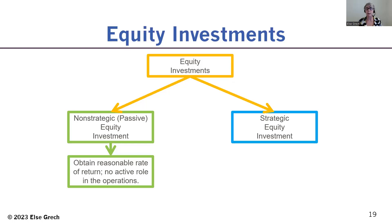A good example would be RBC. As of August 2023, RBC has 1,388,388,000 shares outstanding. Even if an investor corporation purchased 1% of those shares, they would not be able to influence the operations of RBC. An investment of 1% would therefore be categorized as a non-strategic or passive investment.